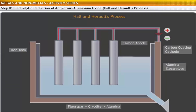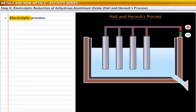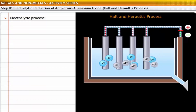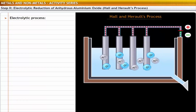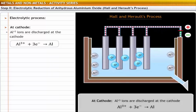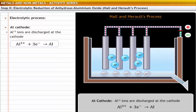In the electrolytic process, electricity is passed through the electrolytic cell. Sodium, aluminium and calcium ions migrate towards the cathode. The aluminium ions discharged at the cathode sink to the bottom of the tank and are periodically tapped off.